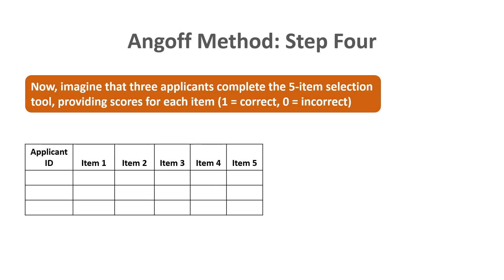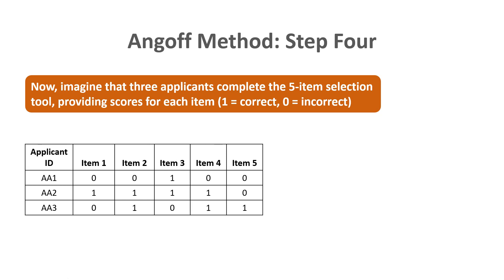For step four, imagine three applicants have completed the five-item selection tool, with scores of 1 for correct and 0 for incorrect. Applicant AA1 scored 0, 0, 1, 0, 0 — correctly answering only item three. Applicant AA2 responded correctly to the first four items but incorrectly to the last. Applicant AA3 responded incorrectly to item one, correctly to item two, incorrectly to item three, and correctly to items four and five.